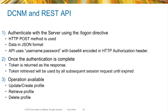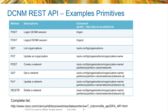DCNM and RESTful APIs — how do we go about doing this? You authenticate with the server first on slash logon using a POST method. All the RESTful APIs we have are in JSON format. You get authenticated and receive a token back. That token is what you use to interface with DCNM if you want to use a Python script and do it yourself. From there, you use that token to update profiles, create profiles, delete profiles, or retrieve information. Here are the different primitives: POST, GET, and DELETE. If you want more information, there's a link that provides a programmer's guide of how to do it yourself.